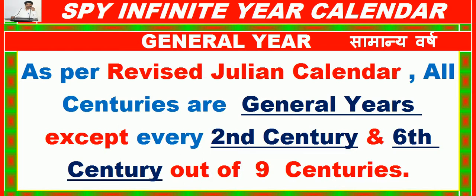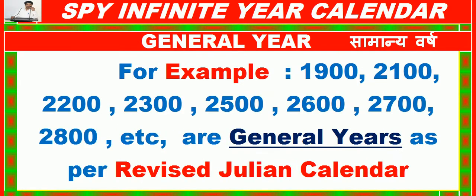For example, 1900, 2100, 2200, 2300, 2500, 2600, 2700, 2800, etc. are General Years as per the Revised Julian Calendar.